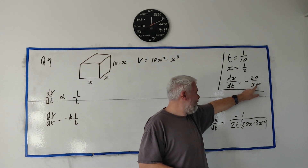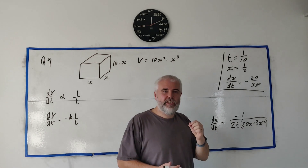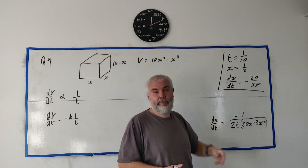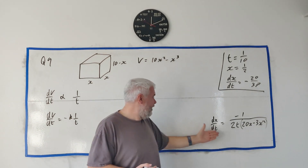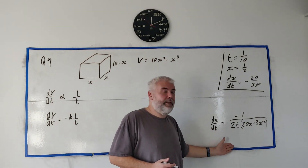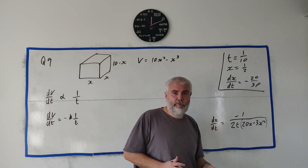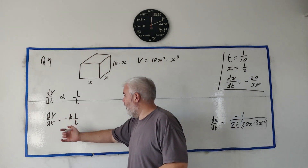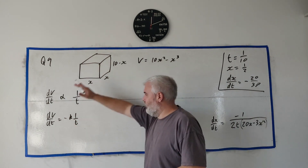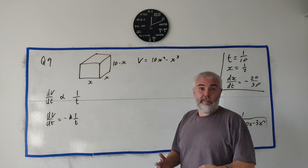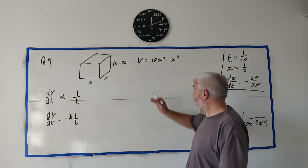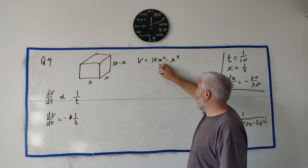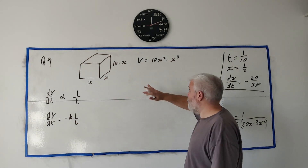The decrease in x was important so we put that minus in. Finally they tell us what we want to get — that's the target answer. This type of question is quite common: you have formulas, rates of change, and we nearly always have to use the chain rule, which is what we're going to use here.